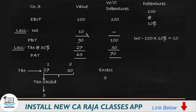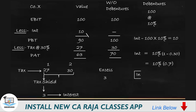So the interest cost is nothing but the cost at the after-tax rate. The effective interest rate is 10% × (1 - 0.3) = 10% × 0.7 = 7%. Therefore, the cost of debt is: KD = Interest Rate × (1 - T).